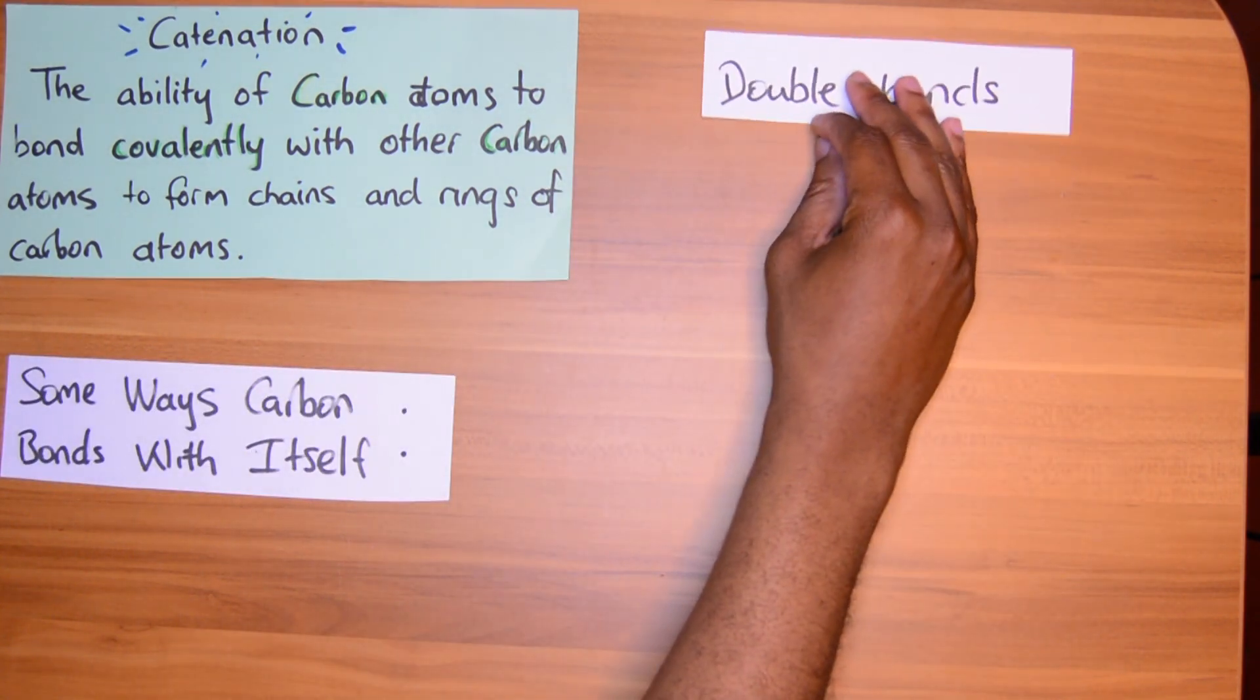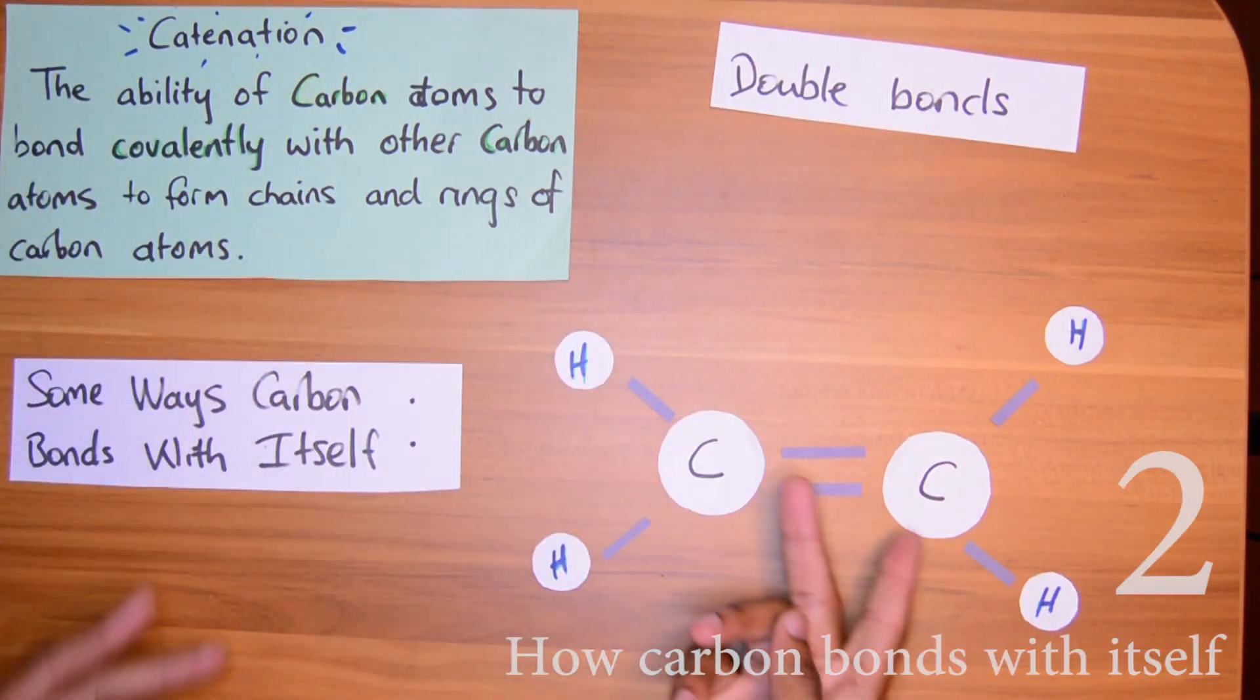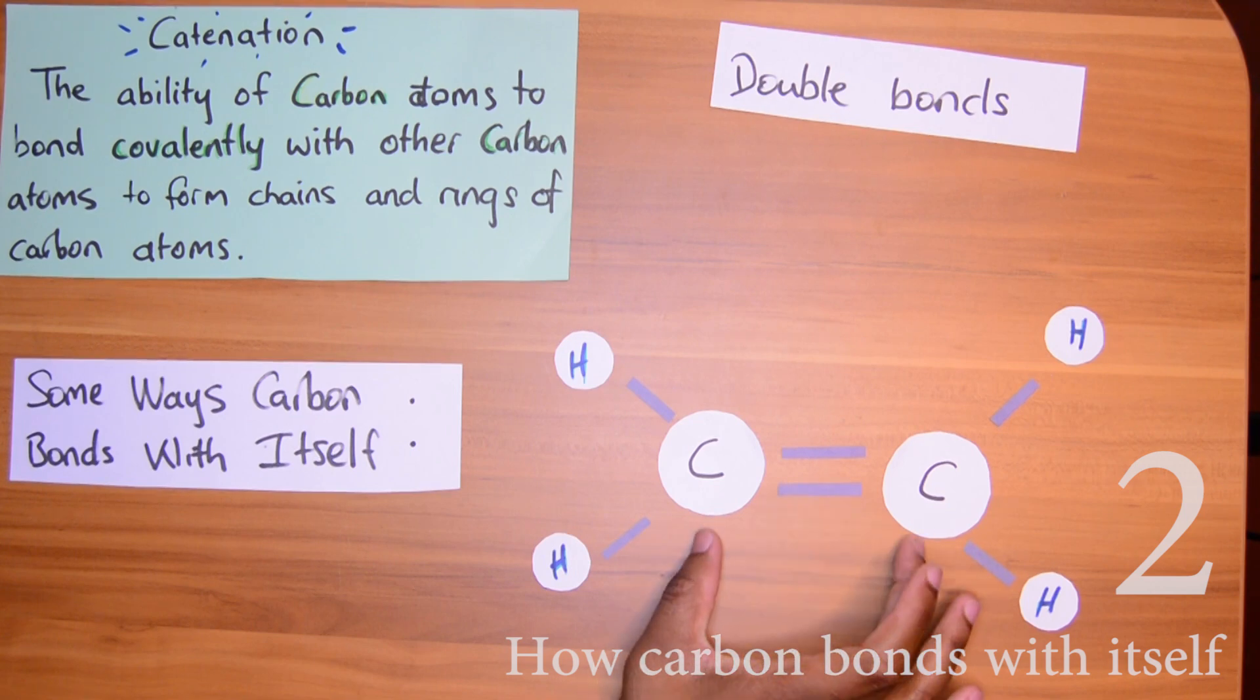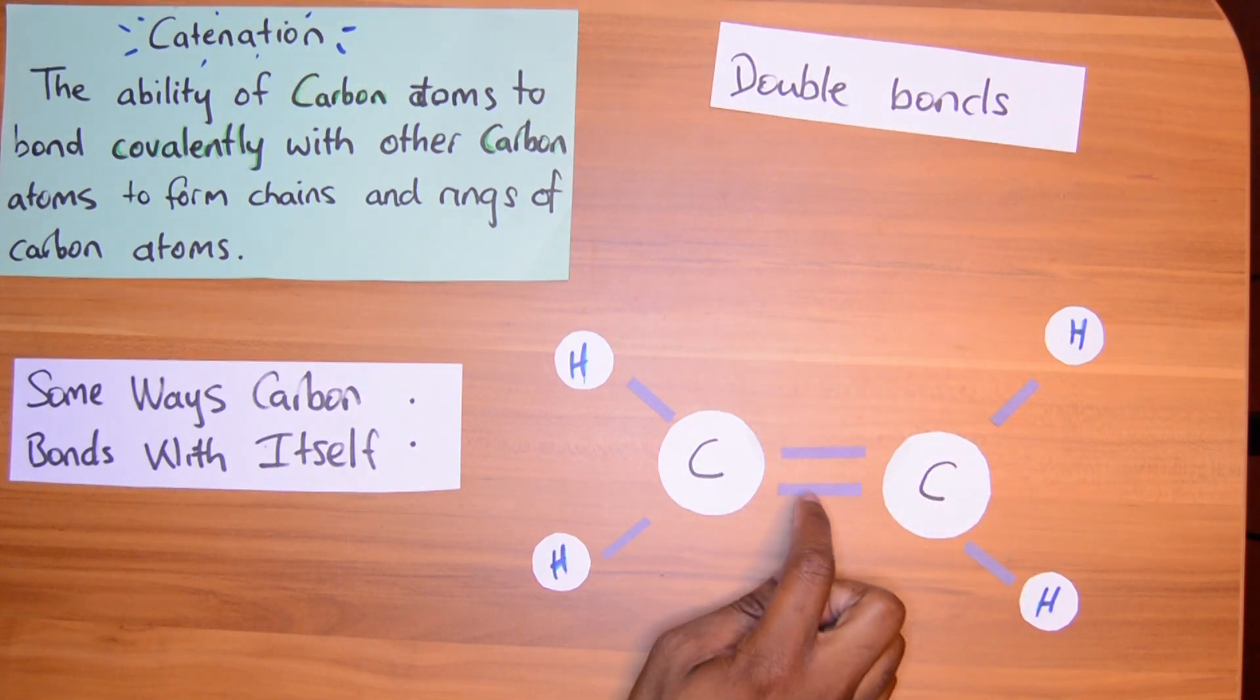You can have double bonds. So there are two bonds here between the carbons in this ethene molecule. But there will be less hydrogen because we still must use just four bonds between the carbon. One, two, three, four.